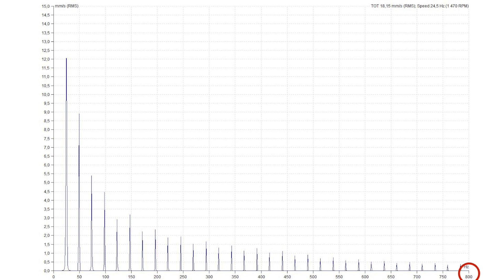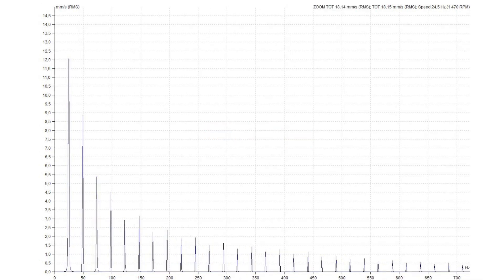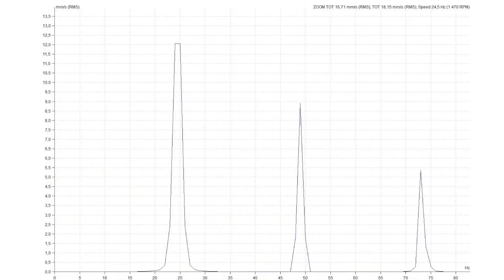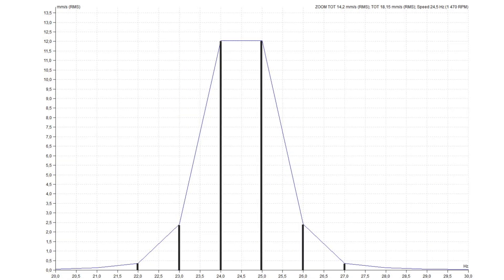Spectrum has a frequency range and contains a number of lines. Spectrum has a resolution, which is defined as the frequency interval between lines. The spectrum lines are only on a limited number of frequencies. When the resolution is 1 Hz, then we get lines on, for example, 22 Hz, 23, 24, 25, 26 Hz and so on.